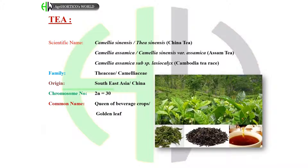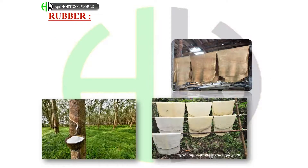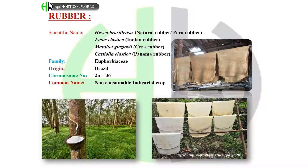Rubber: scientific names — Hevea brasiliensis for natural rubber or para rubber; Ficus elastica for Indian rubber; Manihot glaziovii for Ceara rubber; Castilla elastica for Panama rubber. Family: Euphorbiaceae. Origin: Brazil. Chromosome number: 2n = 36. Commonly called non-consumable industrial crop.